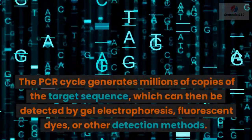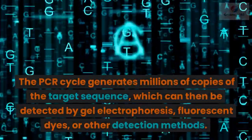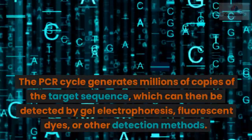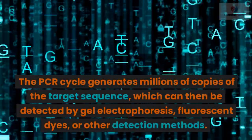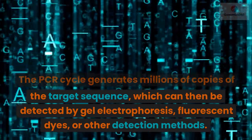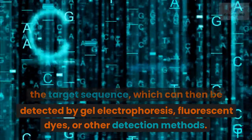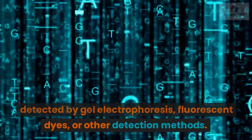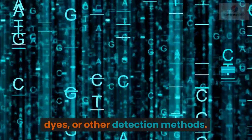The PCR cycle generates millions of copies of the target sequence, which can then be detected by gel electrophoresis, fluorescent dyes, or other detection methods.